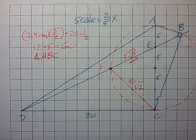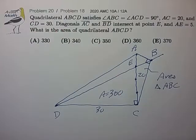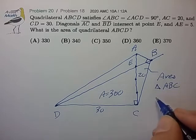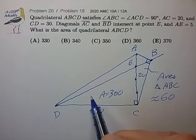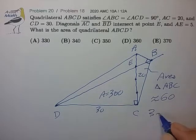And that should get us to our answer. Okay, so getting back to our problem page, we discovered that the area of triangle ABC is very close to 60. And it would appear that our answer is then 360.